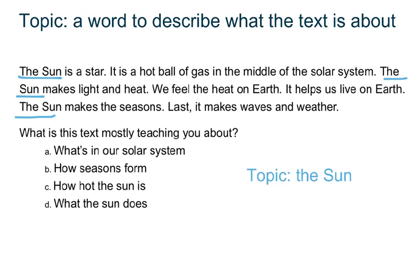Choice A says 'what's in our solar system.' This is not right. The text is about the sun, not our solar system. Choice B says 'how seasons form.' The text does mention seasons, but mostly to teach us more about the sun. This choice is also wrong.